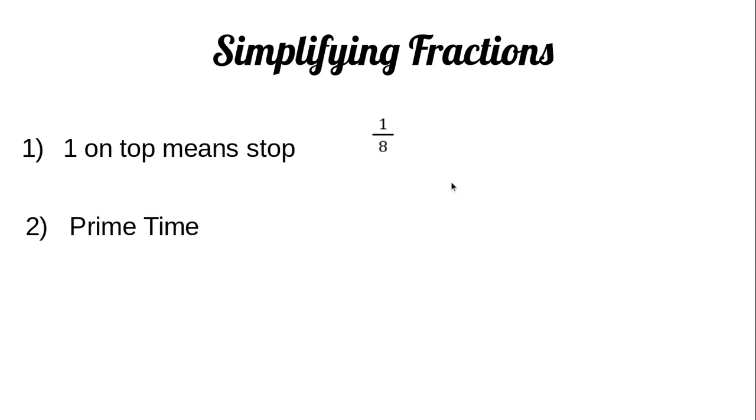The second rule is prime time. That would mean when I have a number that's prime on the bottom, I can stop. A number that's prime is a number that's only divisible by one and itself.